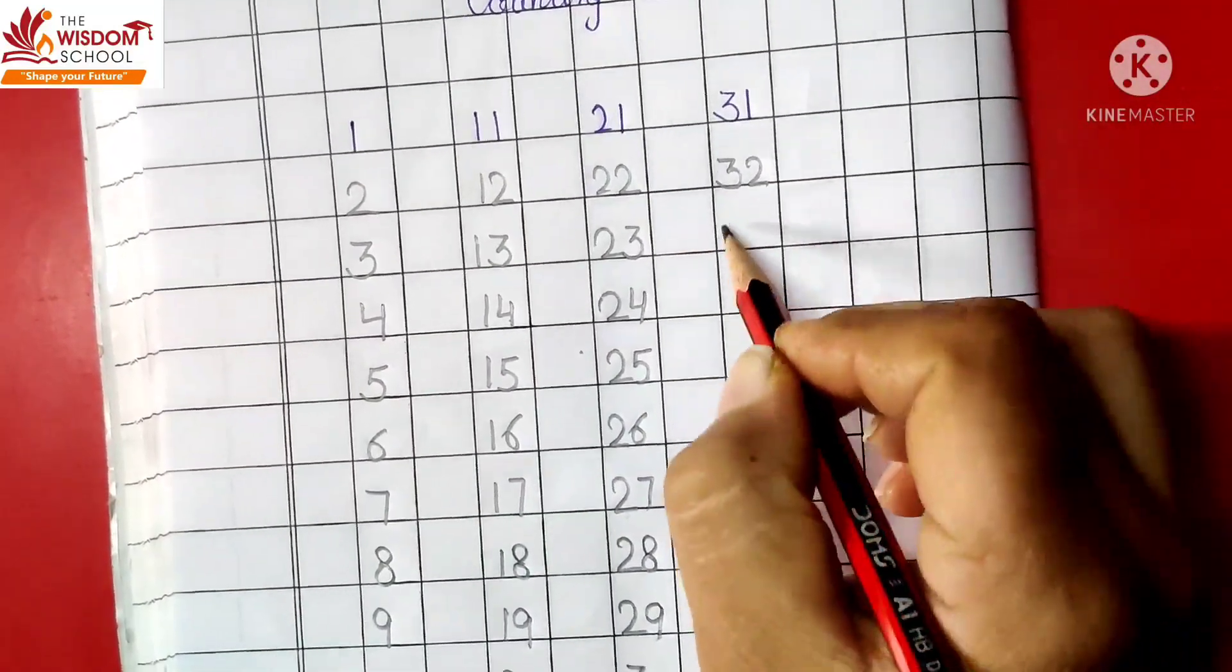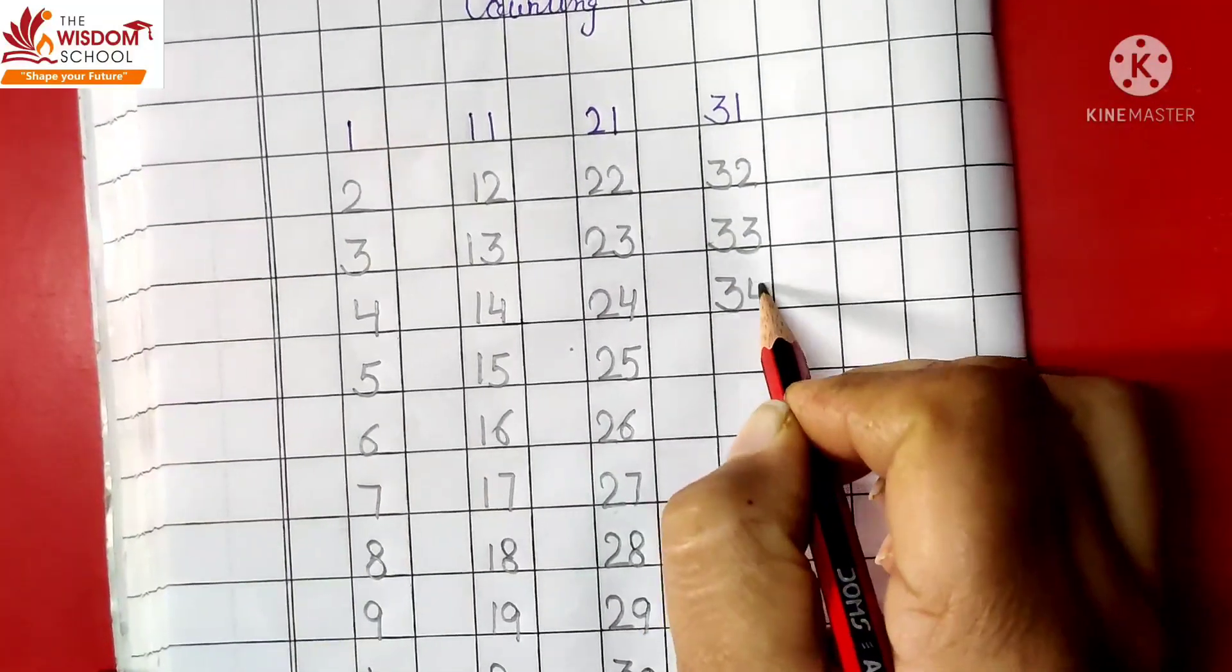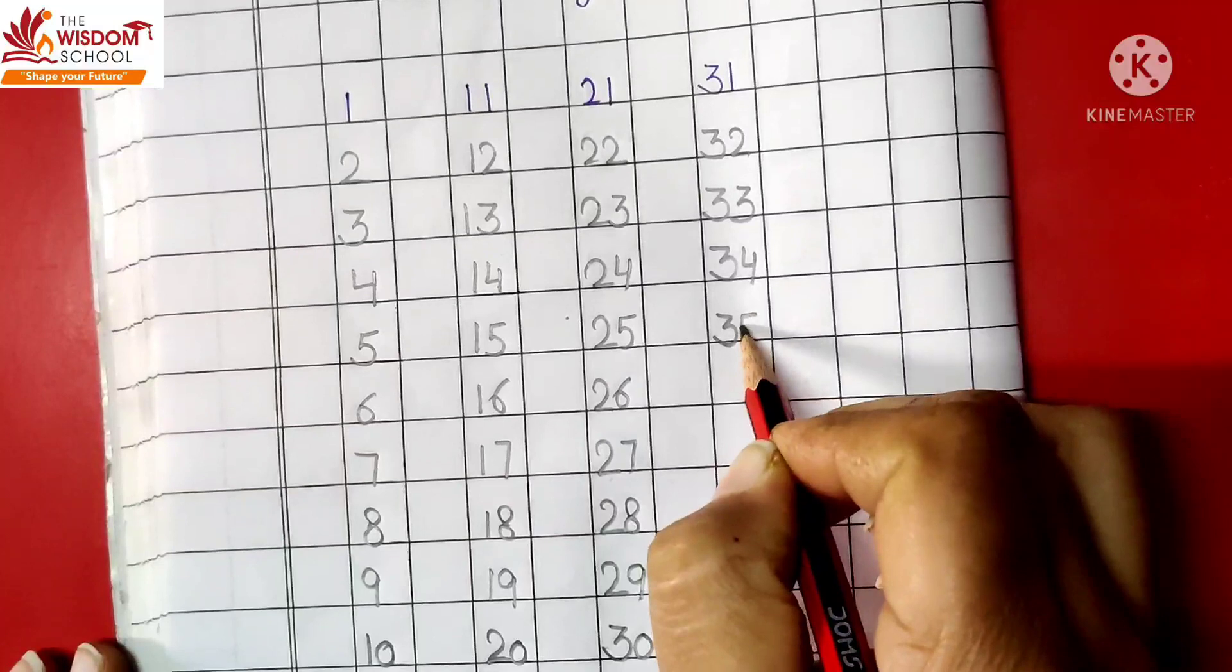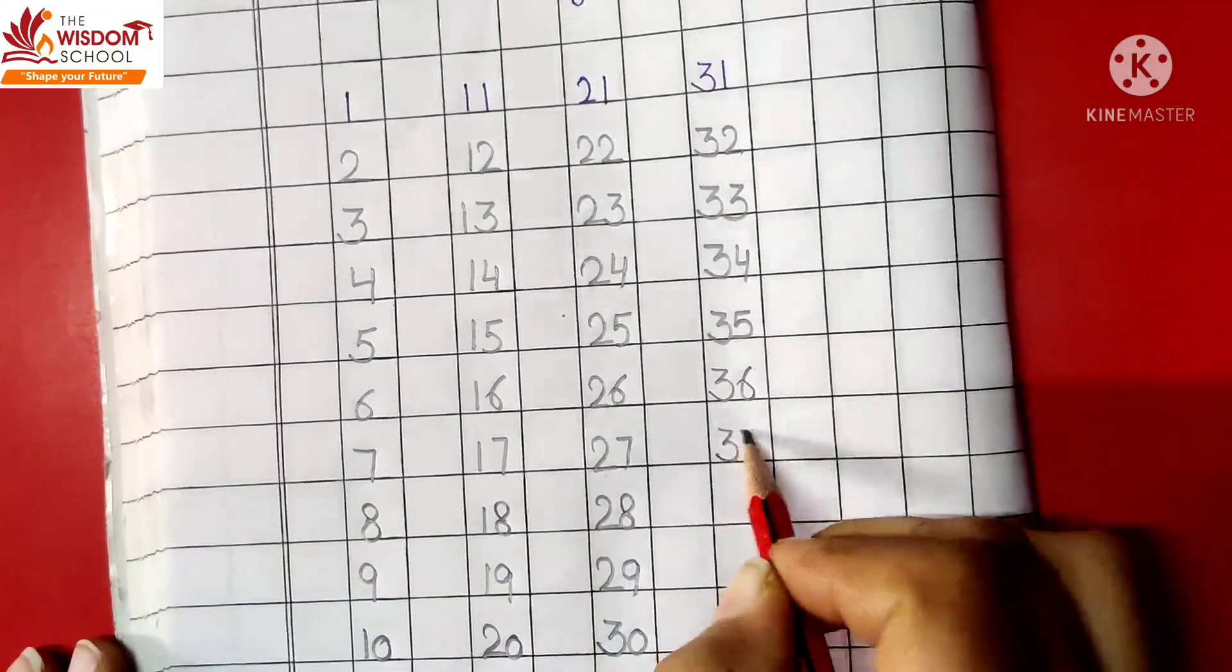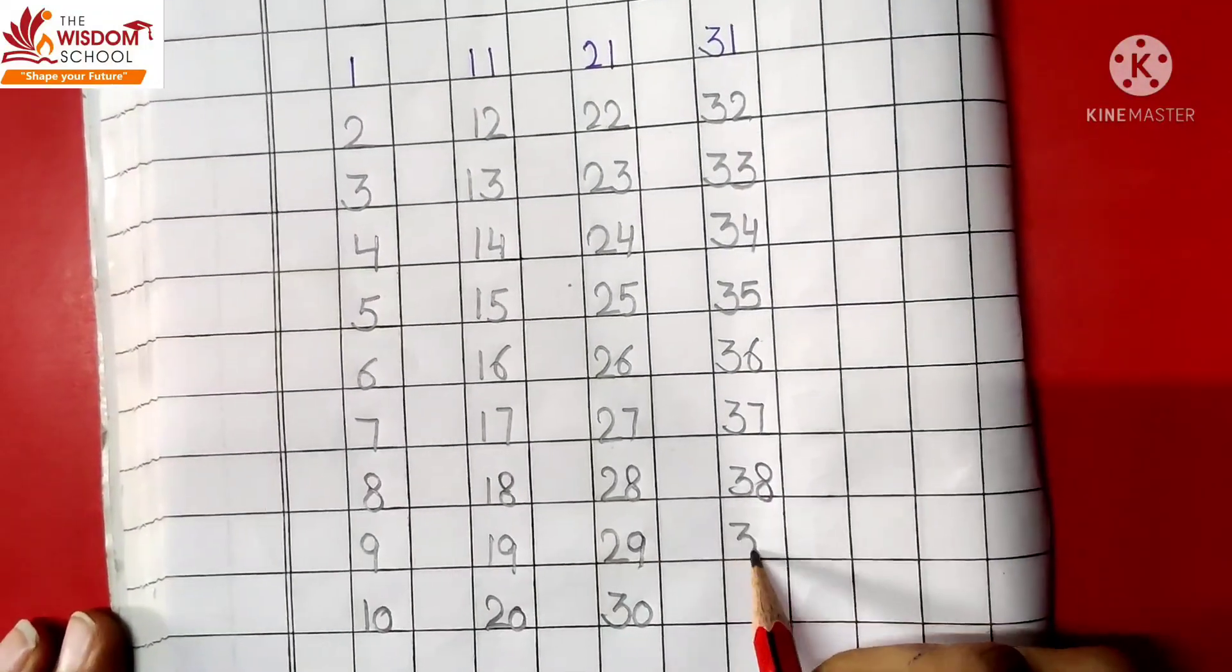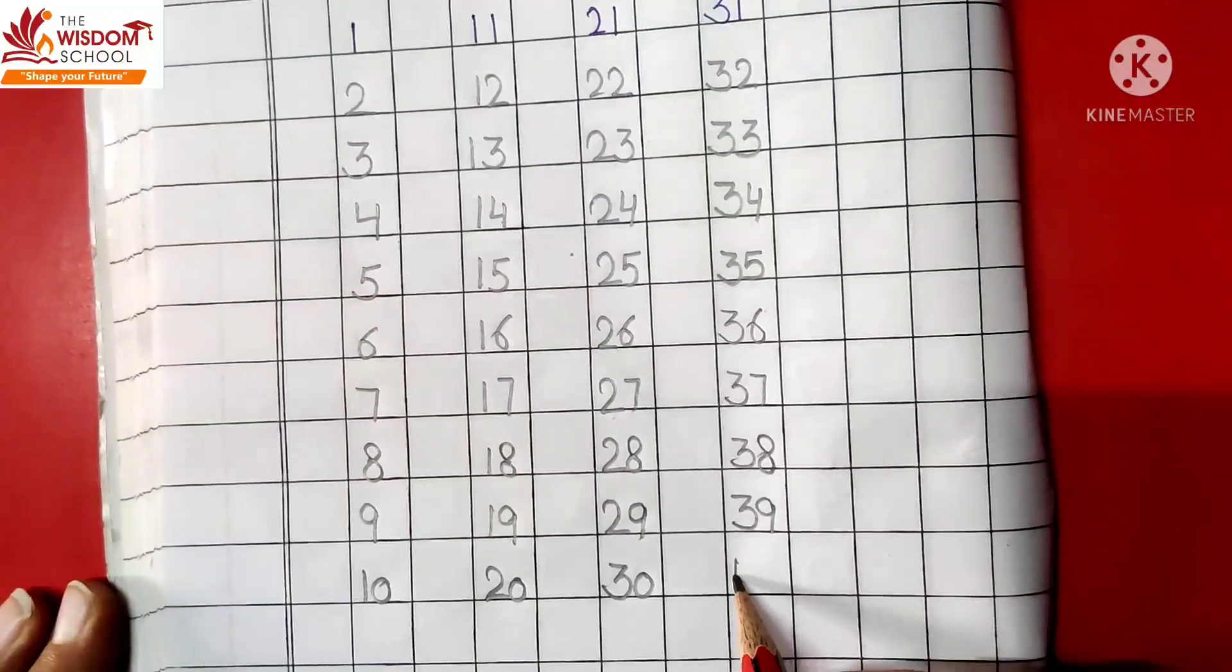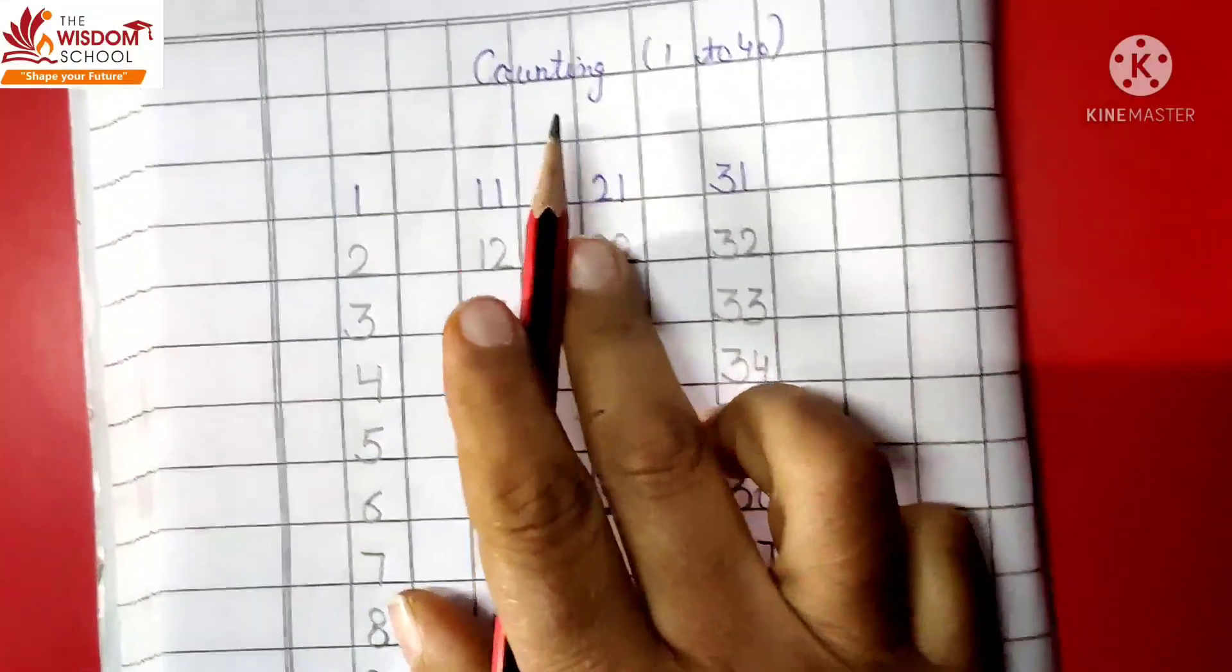Now you have to do what? 32, 32. 33, 33. 34, 34. 35, 35. 36, 36. 37, 37. 38, 38. 39. 40, 40.